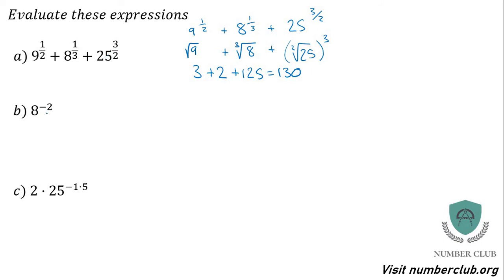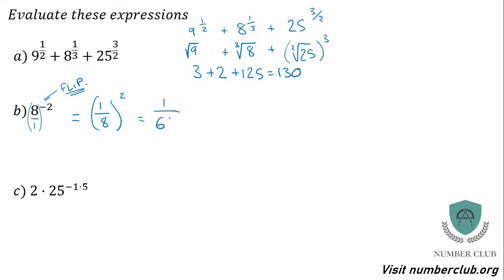8 to the power of negative 2. Anything with a negative power — apply the flip straight away. 8 is the same as 8 over 1. When you have a negative power, you use the reciprocal and give it as 1 over 8. That negative power is a flipper — it flips your fraction. So you end up with 1 eighth squared. Use the power to flip, leave the power as it is, just do the flip on the first step. Then 1 squared is 1, 8 squared is 64, giving 1 over 64.